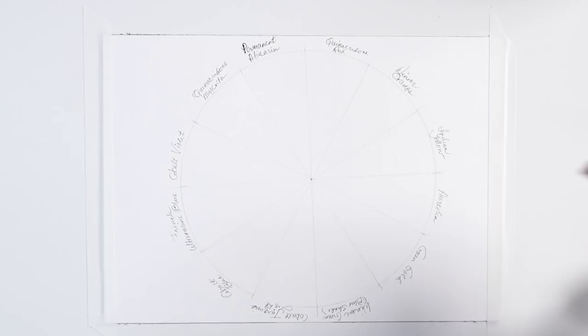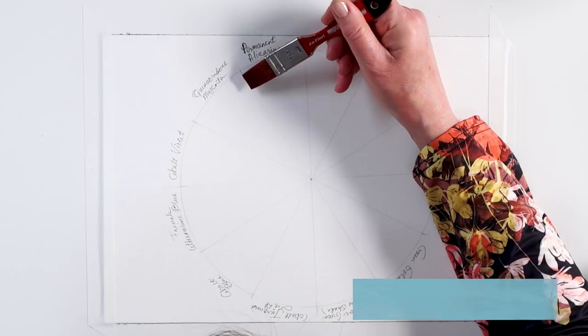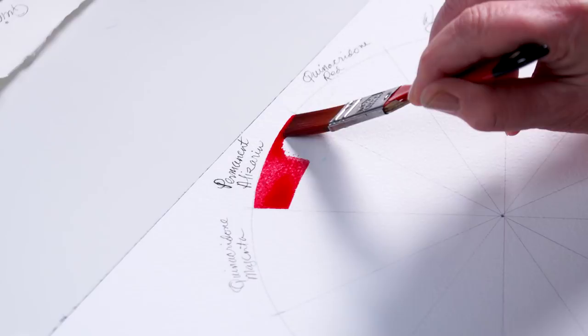Let's go through our colors in this class. I'm going to start with what we're using as a primary red, which is permanent alizarin. It's a red that's based on a very traditional watercolor called alizarin crimson.